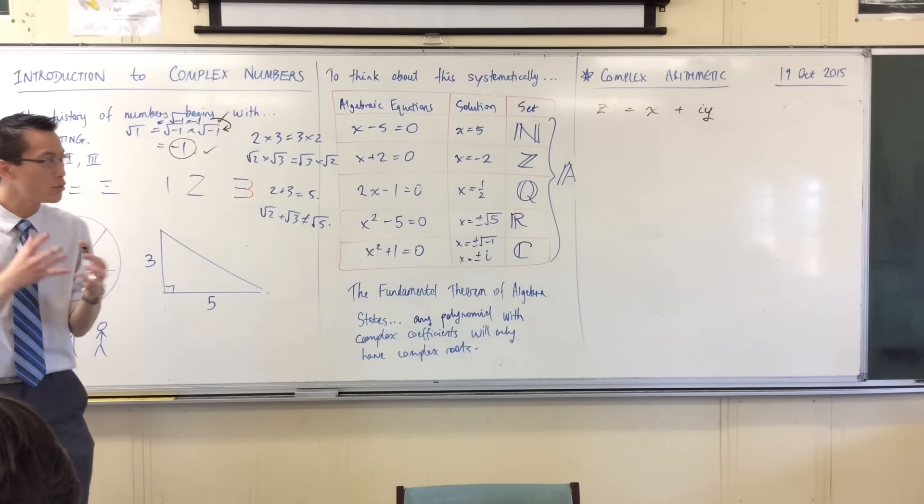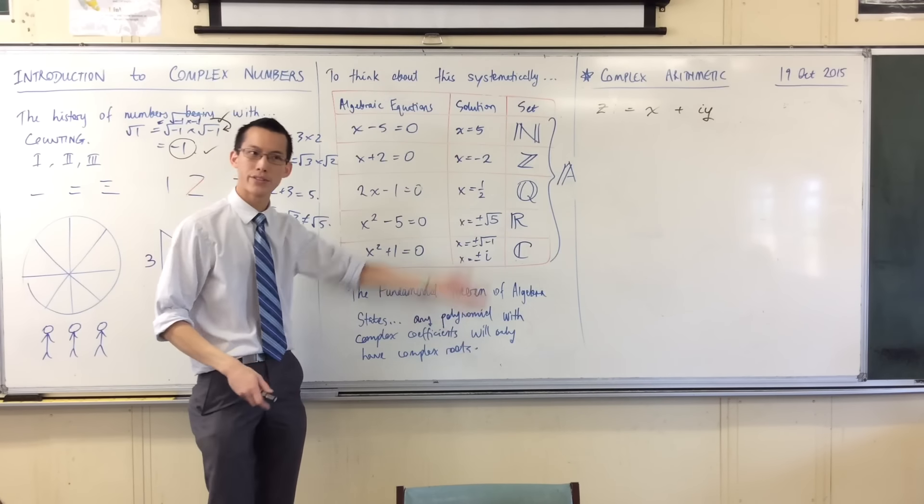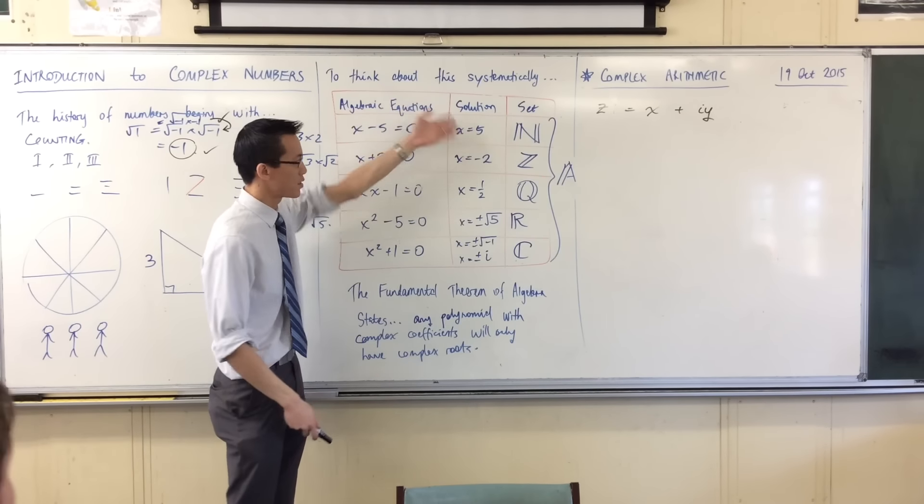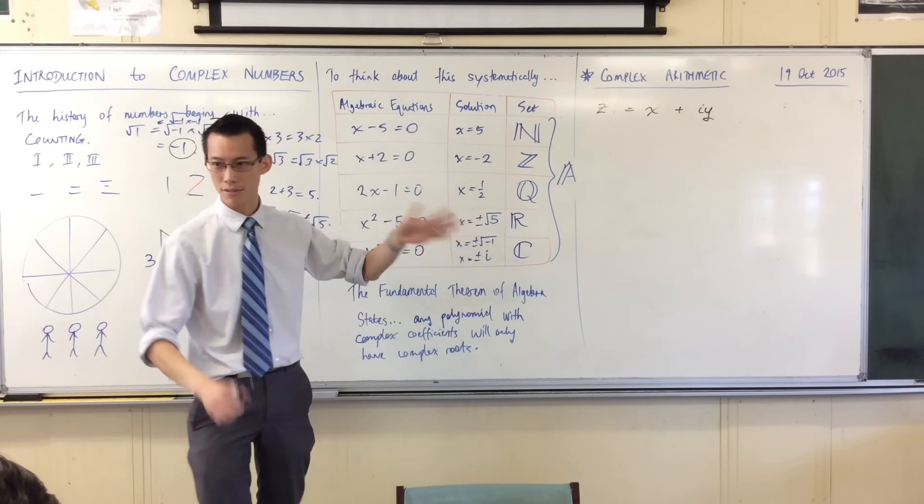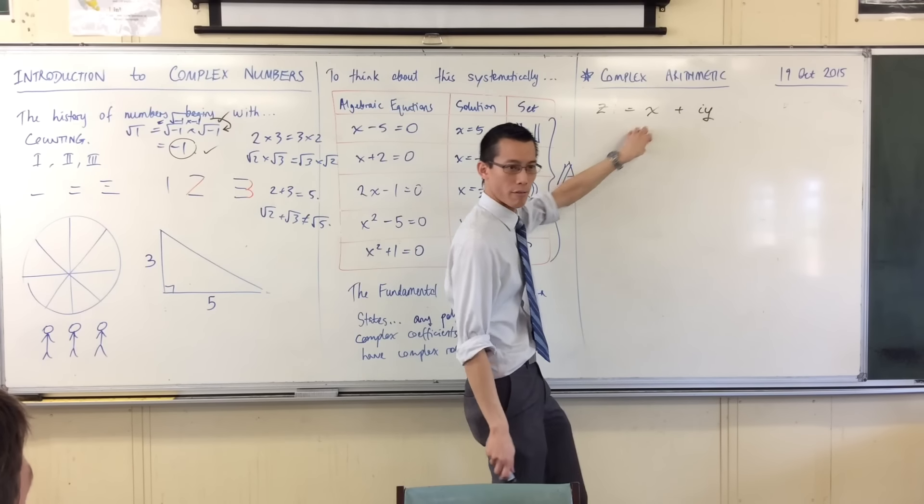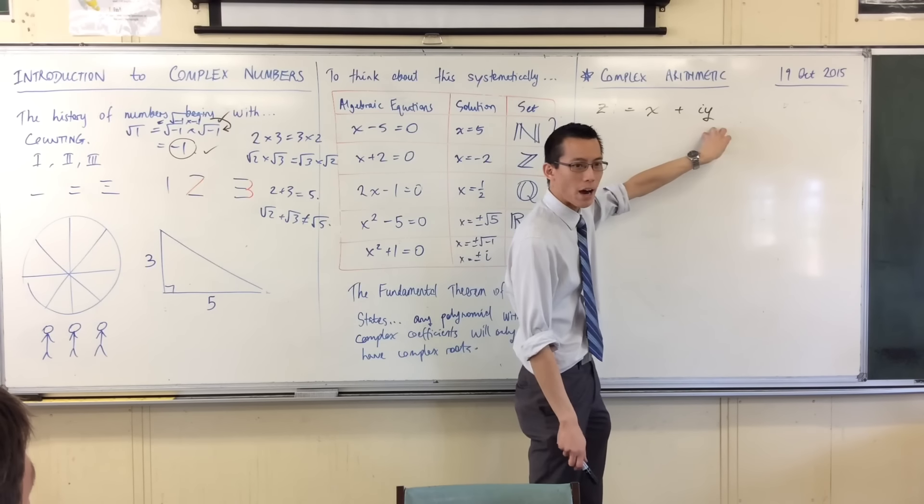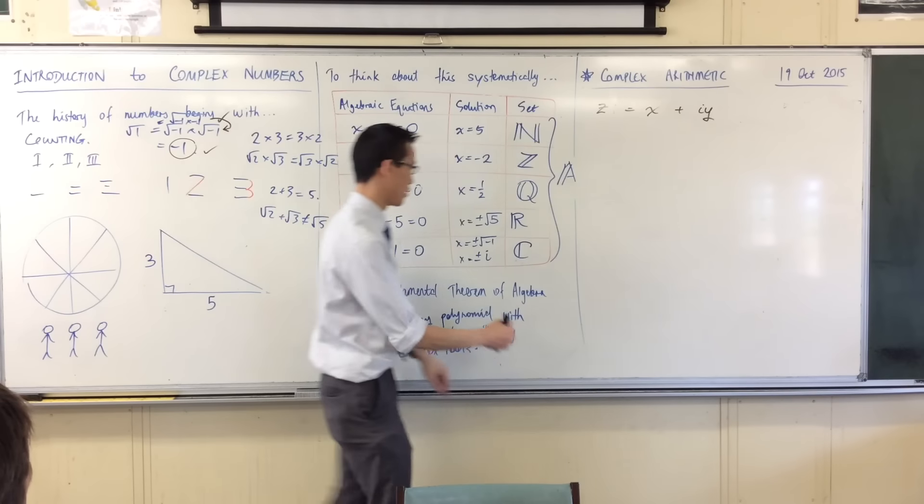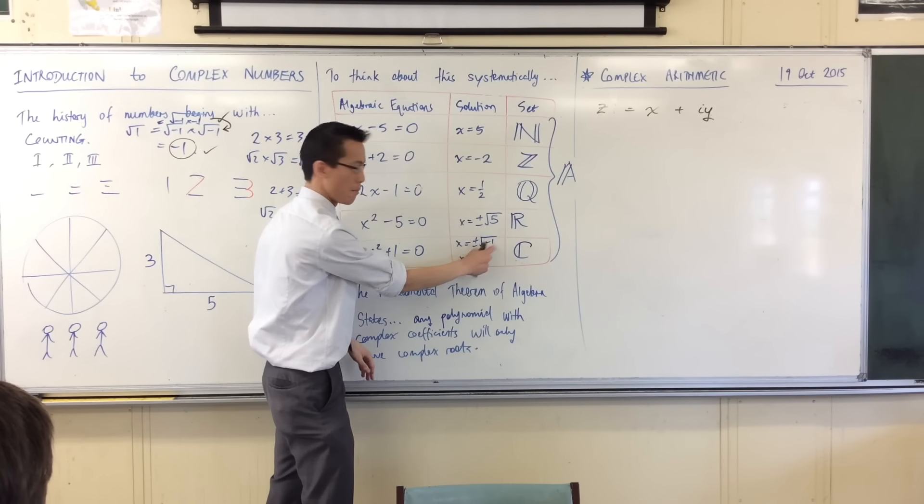X is that real number just like you've been using real numbers before. It can be positive, negative, rational, a square root. That's all fine. Then you've got, in addition to this real part over here, you've got a part which is a multiple of this guy. A multiple of the square root of minus one.